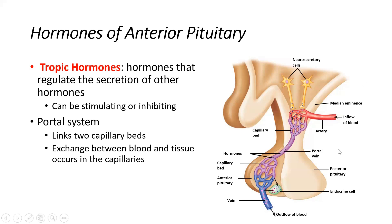That is what we mean by the hypothalamo-pituitary axis — this hierarchy of communication from the hypothalamus to the anterior pituitary to the tertiary endocrine glands.